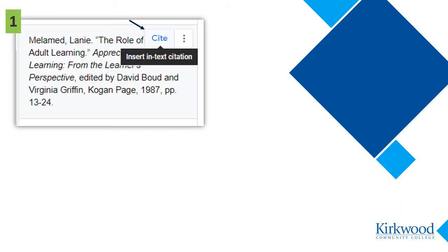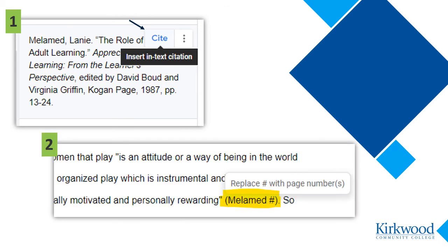Now go over to the citation sidebar and hover over the citation for the source. A cite button will appear and, as you can see, will suggest you insert an in-text citation. Just click it and the in-text citation will appear in your document where you had your cursor. It places a number symbol or hashtag to mark the place where you would insert a page number. You can either delete the number symbol if the page number isn't needed, or replace it with a page number.